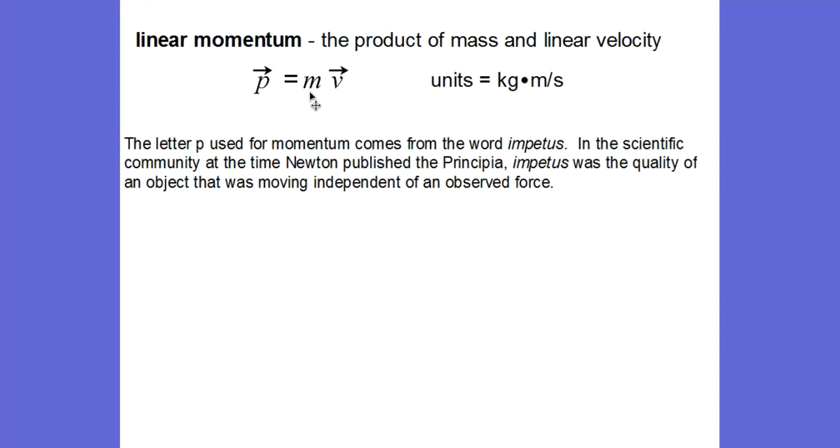Velocity of course is a vector, mass is a scalar, so our direction of our momentum vector will always be in the same direction as the velocity vector. And the units of mass is kilograms, the units of velocity is meters per second. So the units of momentum is kilogram meters per second. There is no other name for it.